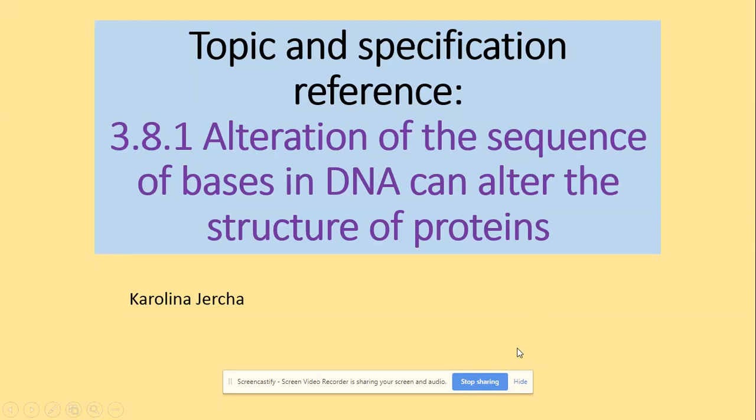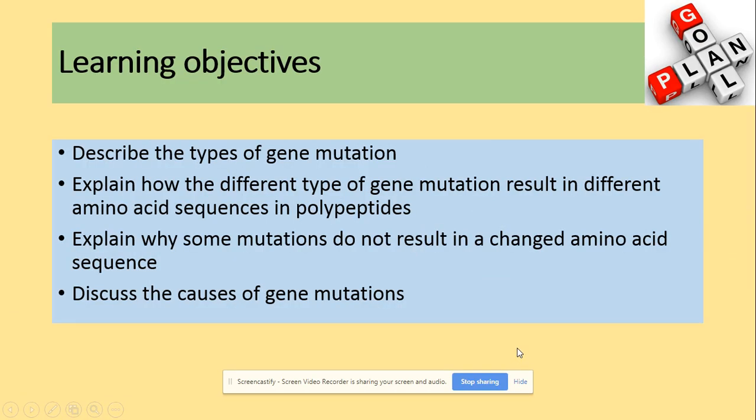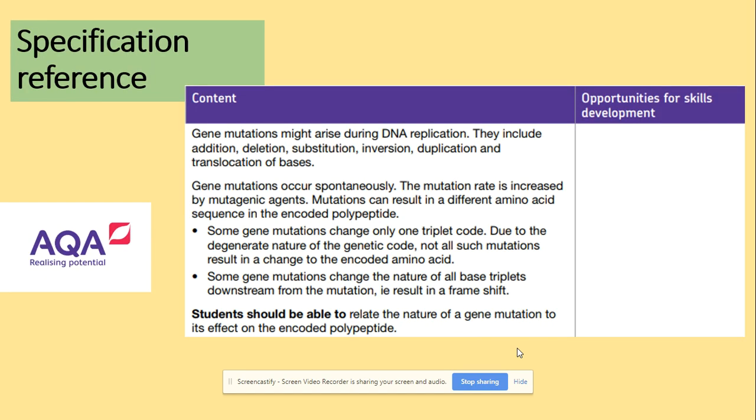Welcome to gene mutation. You need to be able to describe the types of mutations, explain how different types of gene mutation result in different amino acid sequences, or explain why some mutations do not result in a change of amino acid sequence, and discuss the causes of gene mutations. In terms of the specification, this is an extension of the Year One content from Section Four.